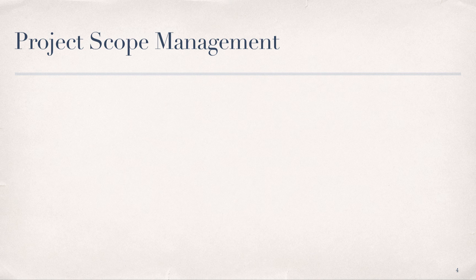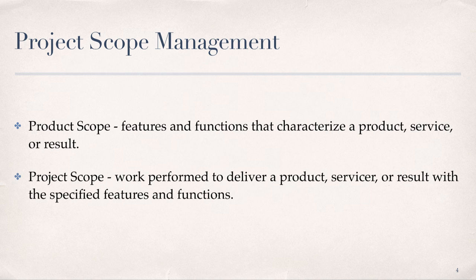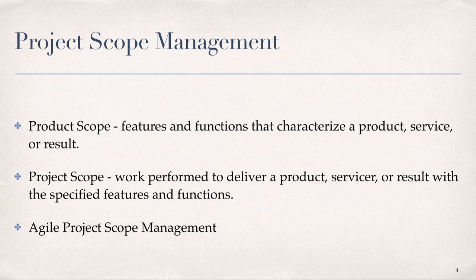This brings us to our discussion of project scope management. There are two parts to this: the product scope, which specifies the features and functions that characterize a product, service, or result, and the project scope, which encompasses all the work performed to deliver a product, service, or result with all of the specified features and functions. The term project scope is often used to be inclusive of product scope. In an agile lifecycle, product increments are developed using multiple iterations, where a detailed scope or sprint backlog is defined and approved for each iteration during sprint planning.